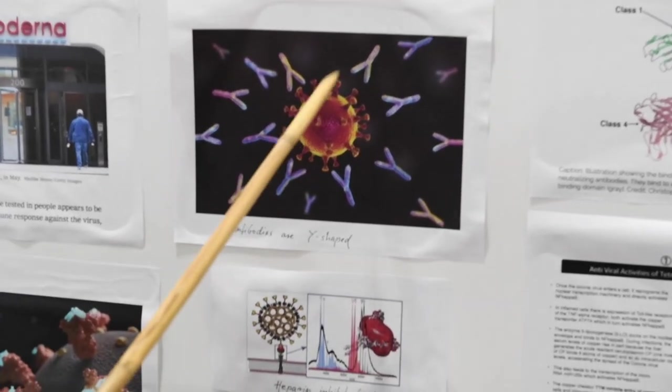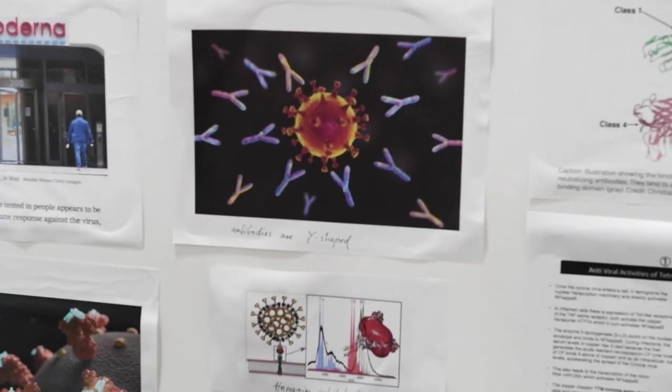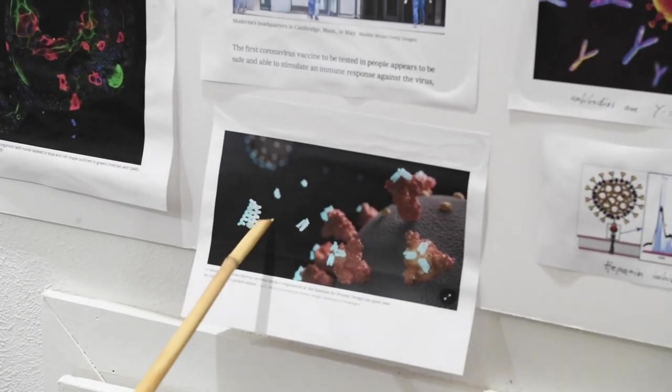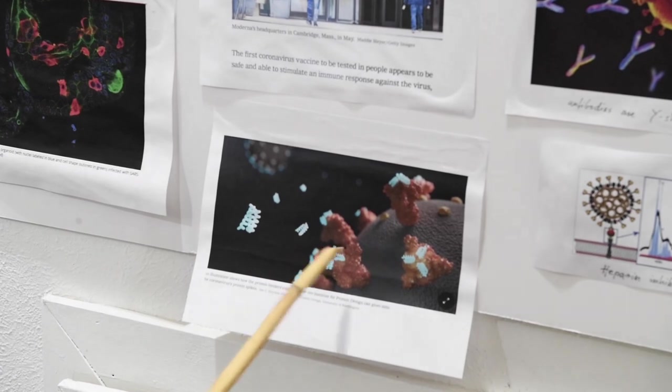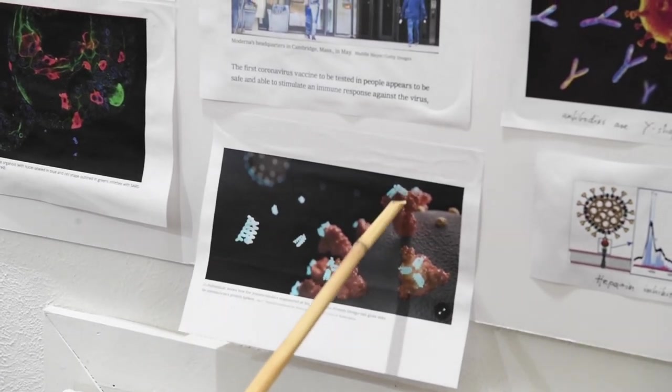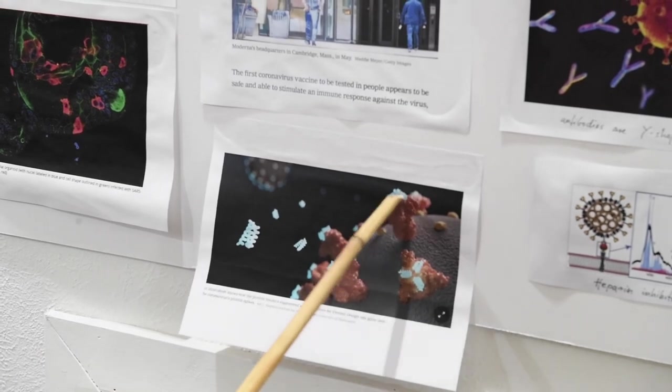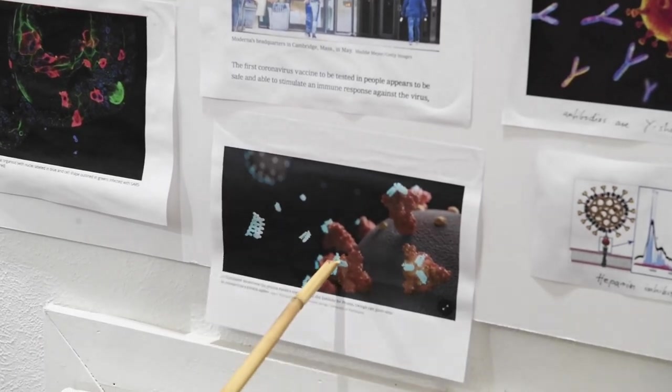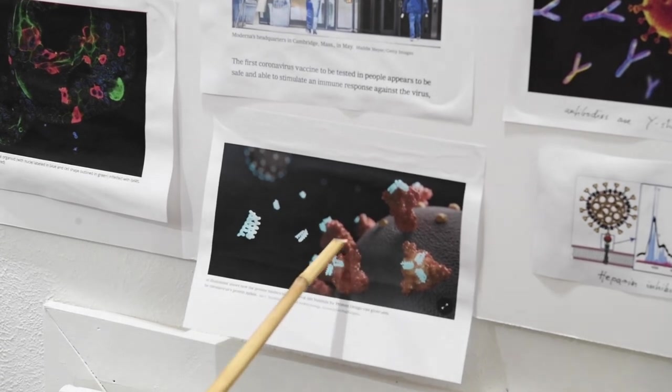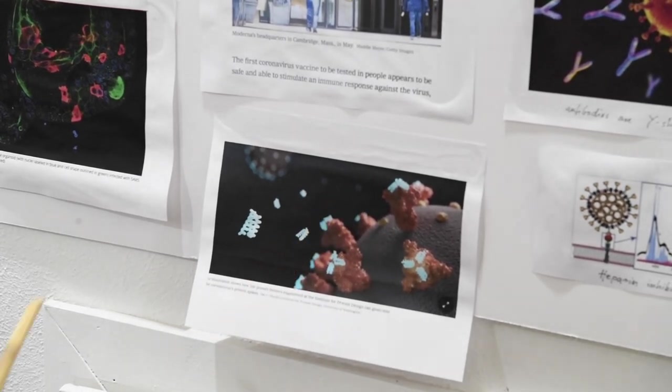And instead of having antibodies, there is a company in California that has developed small proteins called mini binders, and you can see here again this is the virus, this is the spike protein, how these binder proteins are binding to the spike protein preventing it then from entering into the cell.